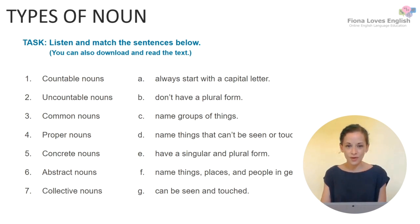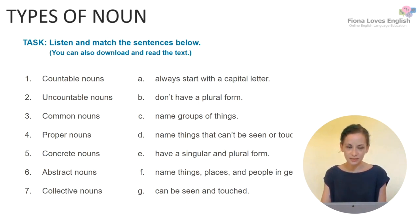Number 4: Proper nouns matches A — they always start with a capital letter. Number 5: Concrete nouns matches G — they can be seen and touched. Number 6: Abstract nouns matches D — they name things that can't be seen or touched. Number 7: Collective nouns matches C — they name groups of things.